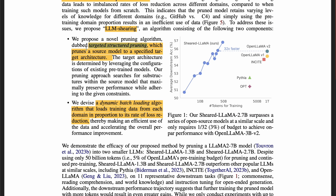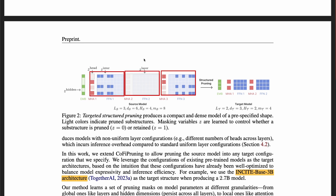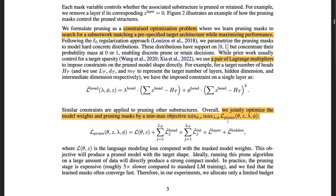They proposed LLM Shearing with two components. First is targeted structure pruning, which prunes a source model to a specific target architecture. Second is dynamic batch loading, which loads training data from each domain in proportion to its rate of loss reduction. In the pruning example, the source model has three layers, each with a multi-head attention module and a feedforward network, a hidden state dimension of 6, 4 heads per attention module, and 8 intermediate dimensions per feedforward network. A masking variable z is used, where lighter-colored cells are pruned (z=0). It's a constrained optimization problem searching for a sub-network matching a target architecture while maximizing performance, using a pair of Lagrange multipliers lambda and phi to constrain each substructure.